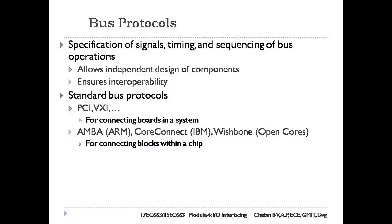The specification of a bus protocol includes a list of signals that interconnect compliant components and a description of the sequences and timing of values on those signals to implement various bus operations. This allows independent design of components and ensures interoperability. Standard bus protocols include PCI, VXI, etc., used for connecting boards in a system. Protocols like AMBA for ARM, CoreConnect for IBM, and Wishbone for OpenCores are used for connecting blocks within a chip.